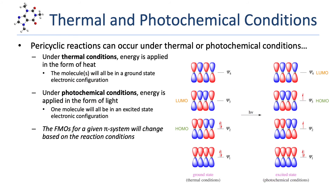Pericyclic reactions can occur under either thermal or photochemical conditions. Under thermal conditions, energy is applied in the form of heat, and all molecules will be in a ground-state electronic configuration. Under photochemical conditions, energy is applied in the form of light, and one molecule will be in an excited-state electronic configuration. It's critical to realize that the frontier molecular orbitals for a given pi system will change based on the reaction conditions. The figure here shows the pi molecular orbitals of 1,3-butadiene. In the ground state, electrons occupy the available orbitals of lowest energy, giving psi-2 as the HOMO and psi-3 as the LUMO.